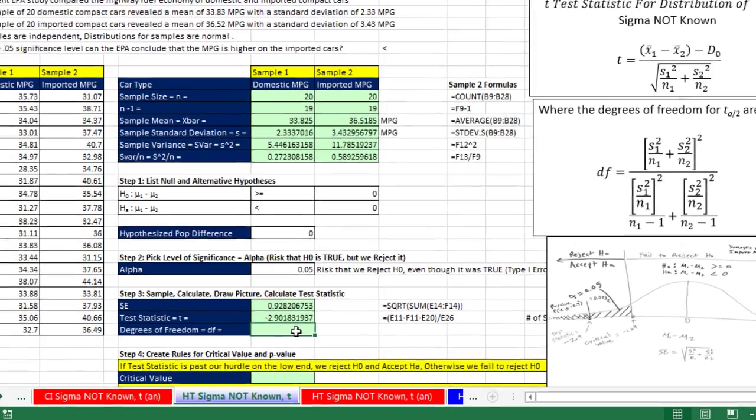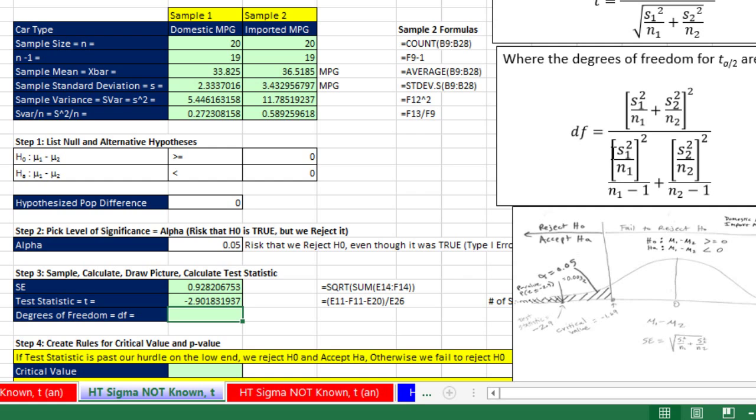We've got to calculate degrees of freedom. That's this thing right here. Just as we did last video, notice we're adding these two bits, and then squaring. So I'm going to do sum of those and then square it. Then I'm going to divide. Again, I'm going to use sum because I'm adding these two things. I'm going to take that little bit, square it, and then divide by this n minus 1. So here it is, degrees of freedom.